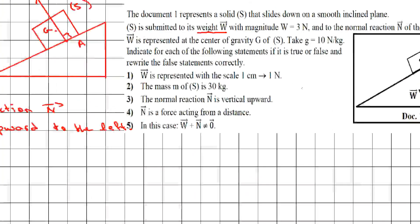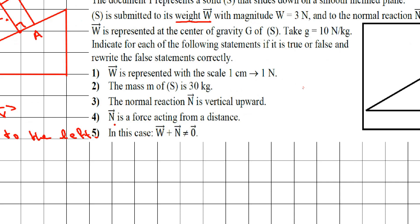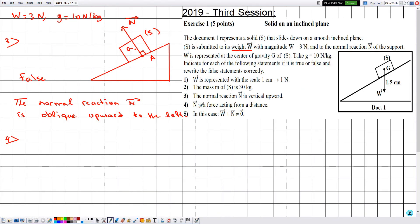Statement four says N is a force acting from a distance. This is false because the only forces that act at a distance are weight, electric, and magnetic forces. All other forces are contact forces — in particular, the normal reaction. The correct statement is: N is a contact force.